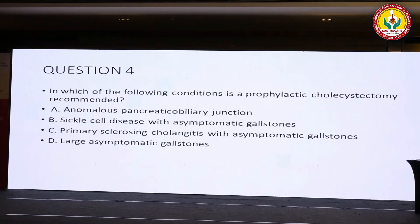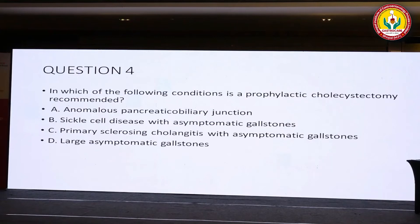Question number 4: in which one of the following conditions is prophylactic cholecystectomy indicated or recommended? Option A: anomalous pancreaticobiliary junction. Option B: sickle cell disease with asymptomatic gallstones. Option C: PSC with asymptomatic gallstones. Option D: LAR with asymptomatic gallstones. In which condition is prophylactic cholecystectomy recommended?